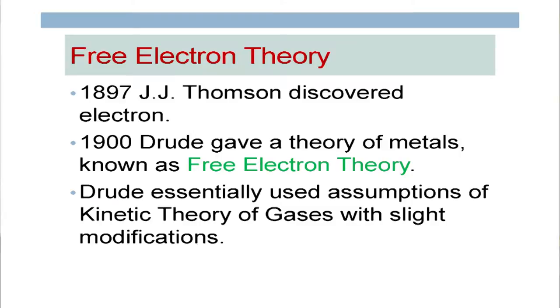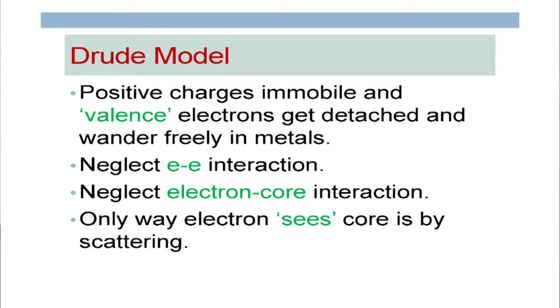Drude assumed that these electrons are totally free, and applied essentially all the concepts of kinetic theory of gases — even though the electron density here turns out to be many orders of magnitude larger than the density of a gas at NTP. What was thought of as a positively charged core can be thought of in today's terms as core electrons, with the valence electrons being the loosely bound outermost electrons that become free.